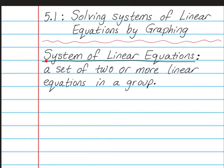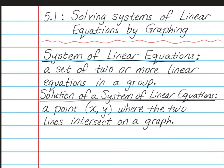A system of linear equations is a set of two — or you could have more, but we're only going to be dealing with two in this class — two or more linear equations that are grouped together as part of a group. You would see them on the same graph. A solution of the system of linear equations is a point, written with parentheses, with the x number and the y number where the two lines intersect on a graph.